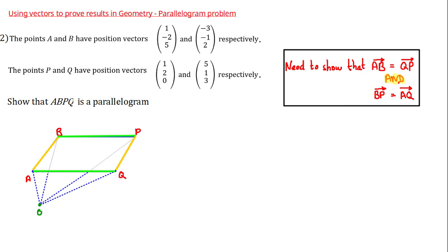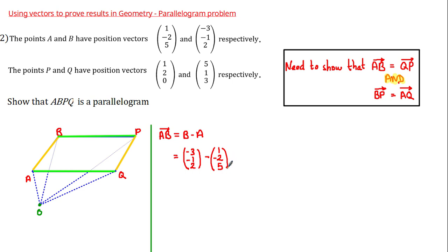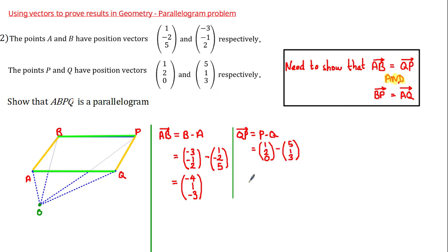Working out vector AB: AB equals B minus A, which is (-3, -1, 2) minus (1, -2, 5). That gives -3 minus 1 = -4, then -1 minus (-2) = 1, and 2 minus 5 = -3, so AB = (-4, 1, -3). Calculating vector QP: QP equals P minus Q, which is (1, 2, 0) minus (5, 1, 3), giving 1 minus 5 = -4, 2 minus 1 = 1, and 0 minus 3 = -3. So QP = (-4, 1, -3), confirming vector AB equals vector QP.